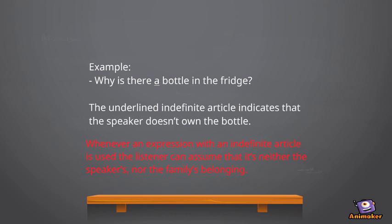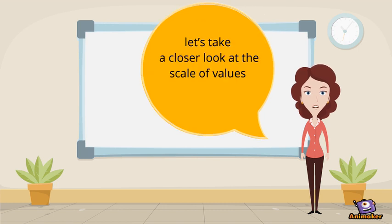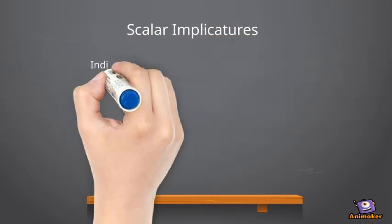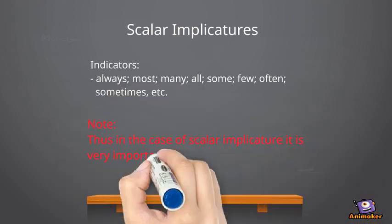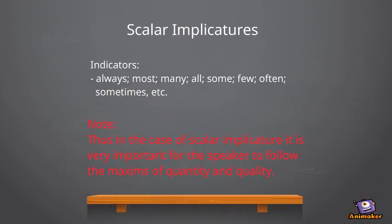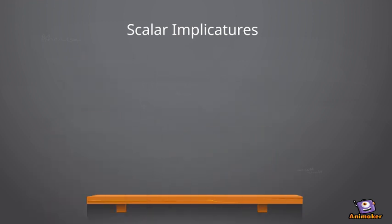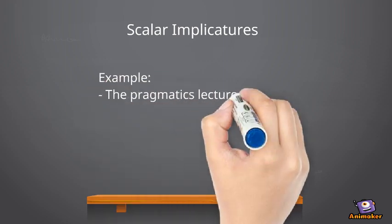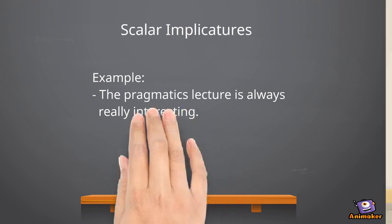Let's take a closer look at the scale of values. Indicators of a scalar implicature are, for example: all, most, many, some, few, always, often, sometimes, and so on. Thus, in the case of scalar implicature, it is very important for the speaker to follow the maxims of quantity and quality. The speaker selects the most appropriate word from the scale, which is most truthful and informative according to the situation. The implicature in this case would be that the lecture is never uninteresting, which is indicated by 'always.'